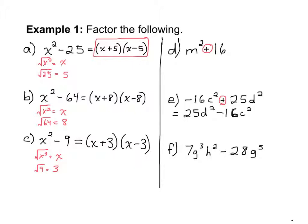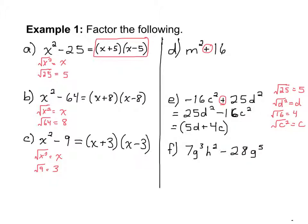For example e, the square root of 25 is 5, the square root of d squared is d, the square root of 16 is 4, and the square root of c squared is c. We write our answer by taking the square roots of the first terms — 5 and d — at the beginning of each factor. Our first factor is 5d plus 4c and our second factor is 5d minus 4c.